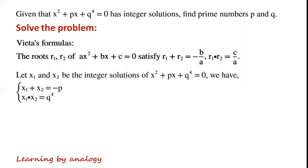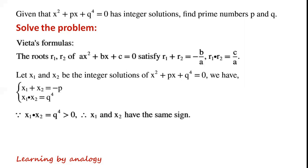For x squared plus px plus q to the power of 4 equals 0, we have x1 plus x2 equals minus p, and x1 times x2 equals q to the power of 4. Because x1 times x2 equals q to the power of 4, which is greater than 0, x1 and x2 have the same sign. Because x1 plus x2 equals minus p, which is less than 0.